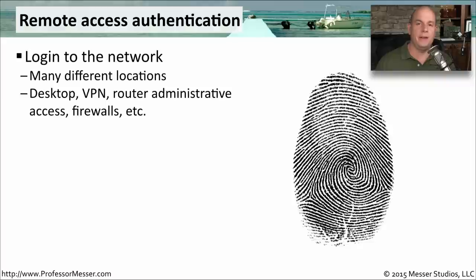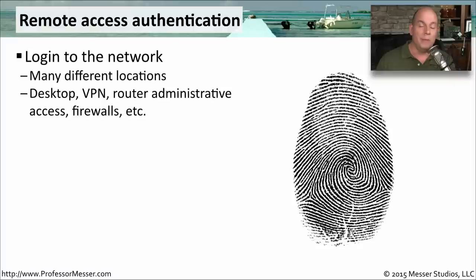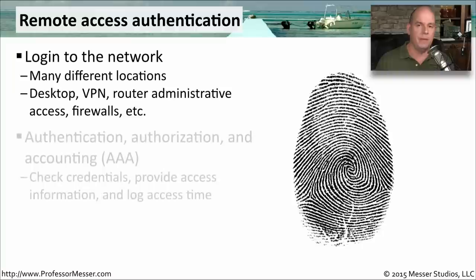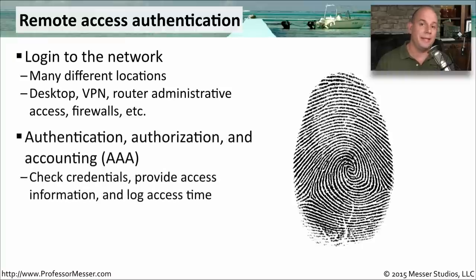One of the challenges with having very large enterprise networks is there are so many different places where you need to log in or authenticate to different resources on the network. There are also a lot of different locations where you might be — off-site, inside the building, or in a different location. You might be connecting from your desktop through a VPN, logging into routers to administer them, or configuring firewall rules. Each one of those places needs some type of authentication, and we also need to make sure that all of this information is logged.